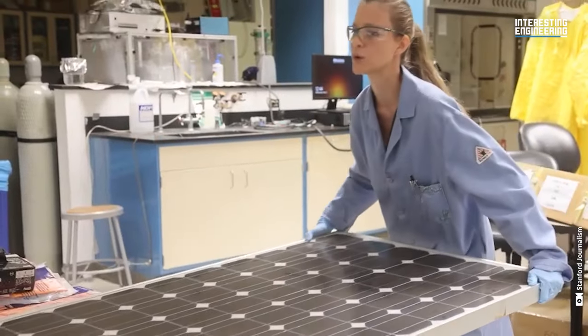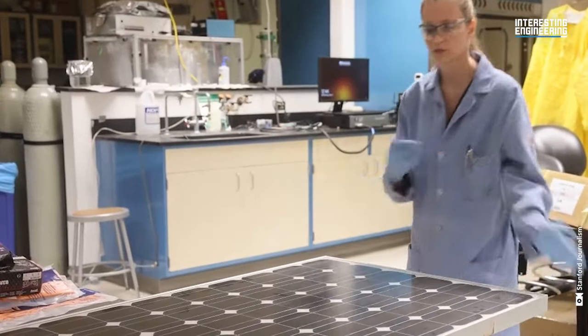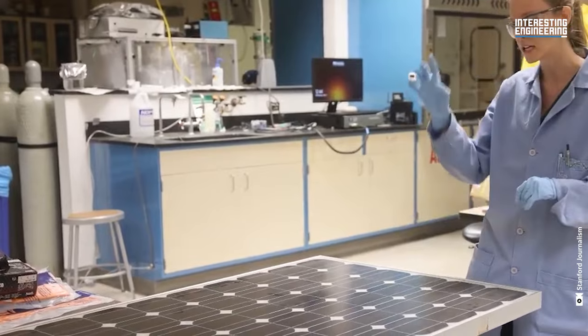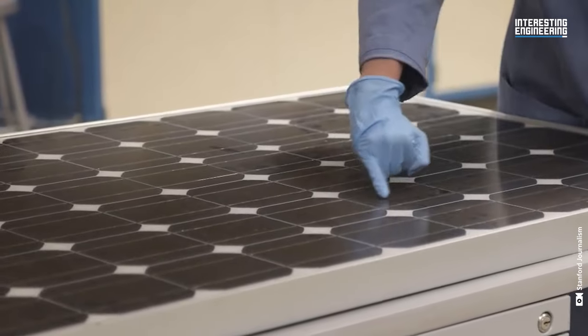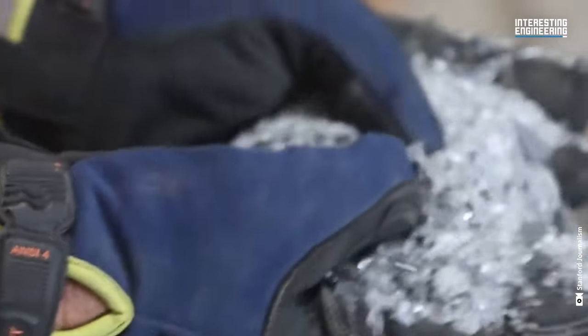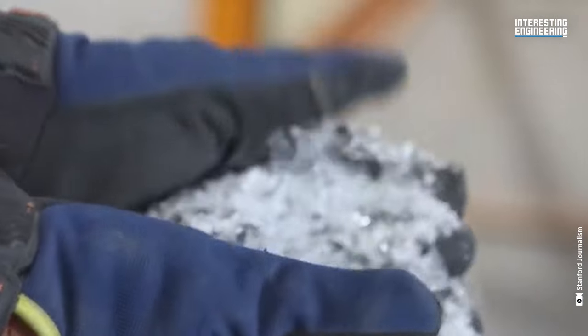The first wave should be about 2030, and then there's a huge wave that's expected to hit about 2050. With that wave in 2050, the global estimate of PV waste is 78 million tons of panel waste.